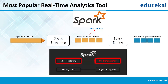Spark has a micro-batching processing model, which means before processing the real-time streams, it puts them into small batches and then processes them. Spark Streaming receives live input streams and divides the data into batches, which are then processed by the Spark engine to generate the final stream of results in batches. Due to the micro-batching nature of Spark, it has medium latency, as it takes some time to create small batches from the input stream before processing. As the message is delivered exactly once to the receiver, the throughput is high for Spark.